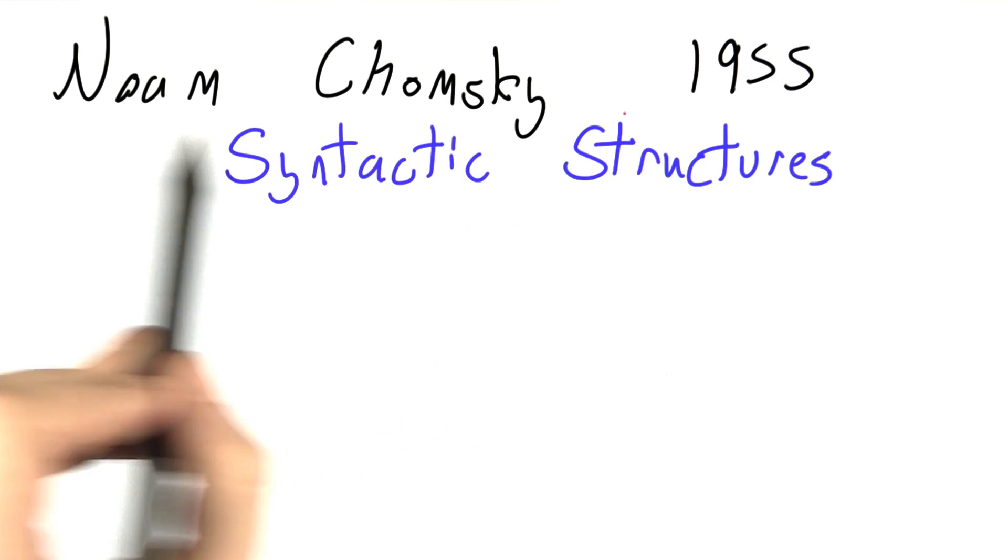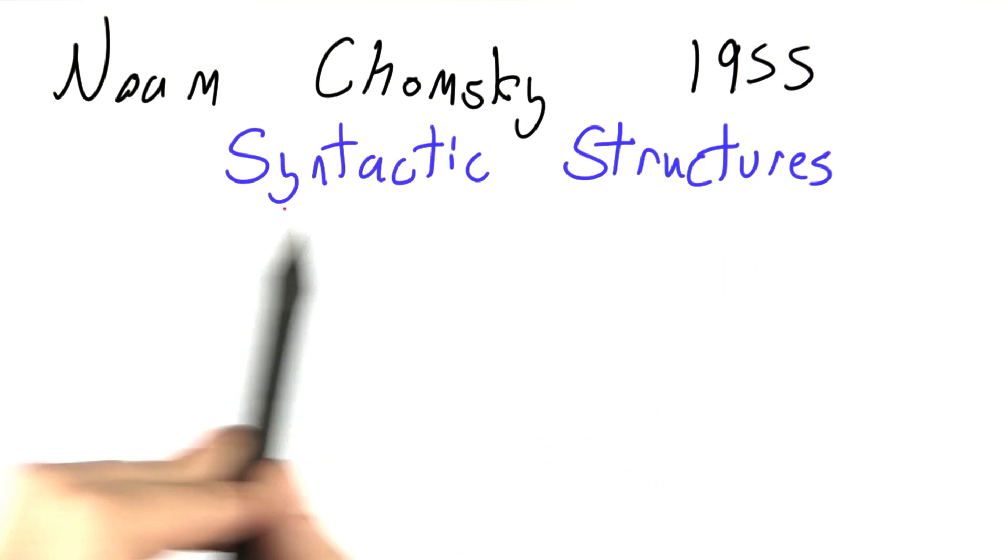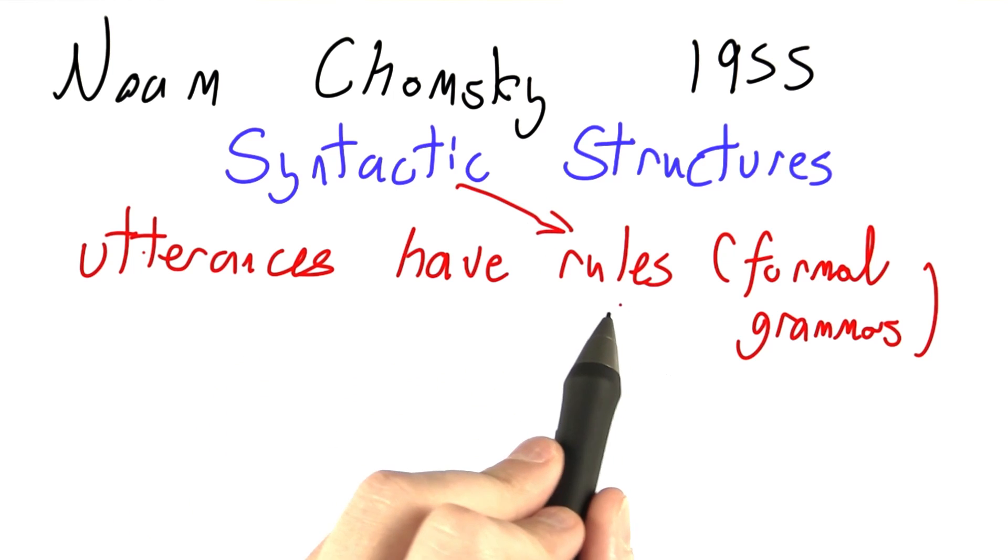Noam Chomsky is a philosopher and linguist, and in his seminal 1955 work Syntactic Structures, he suggests that utterances have rules, syntactic rules, and they're governed by formal grammars.